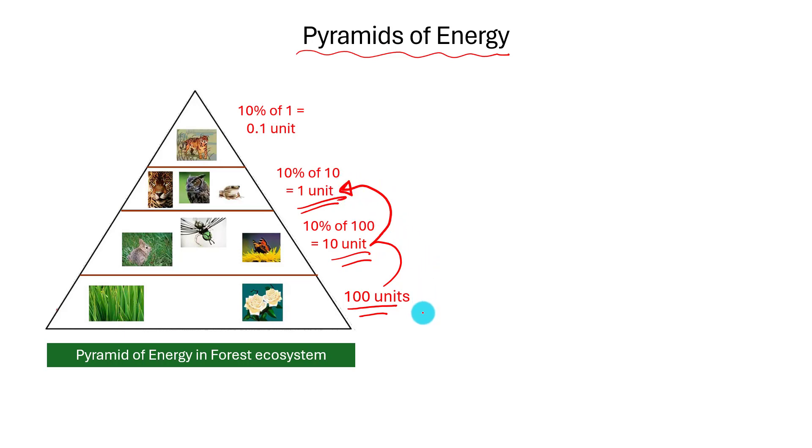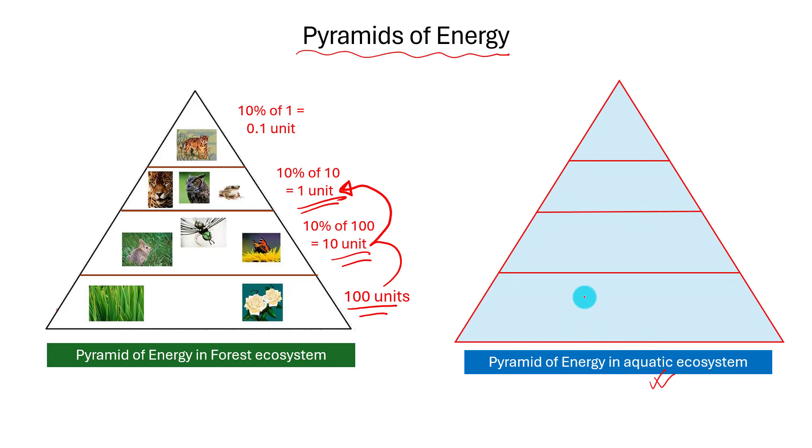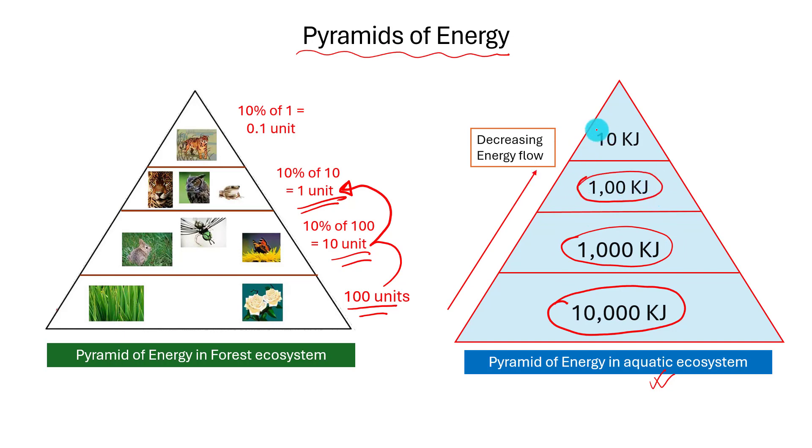The energy flow pattern in aquatic environments is similar to that of the terrestrial environment. The amount of energy decreases from 10,000 kJ at the producer level to 1,000 kJ at the primary consumer level to 100 kJ at the secondary consumer level and finally to 10 kJ at the tertiary consumer level.